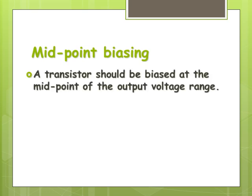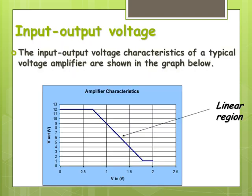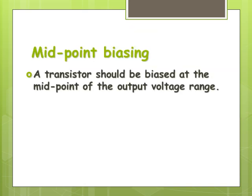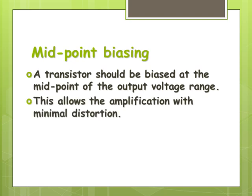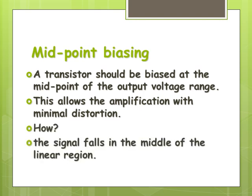So midpoint biasing. Basically, what it means is, we want to set the middle of the input voltage to the middle of this graph here. That's our goal. What that does is allows the amplification of your signal with very little distortion. And the reason is that it falls in the middle of the linear region. So as it moves up and as it moves down from that midpoint, it stays in that region that we call the linear region.